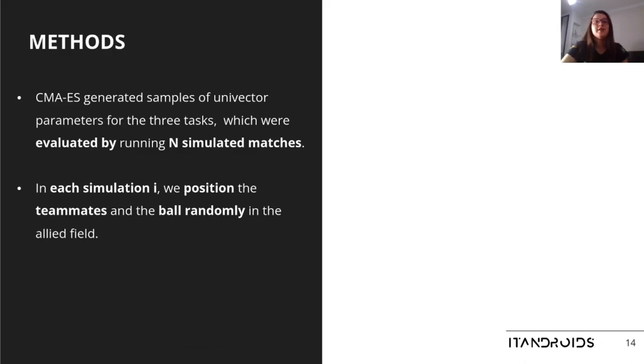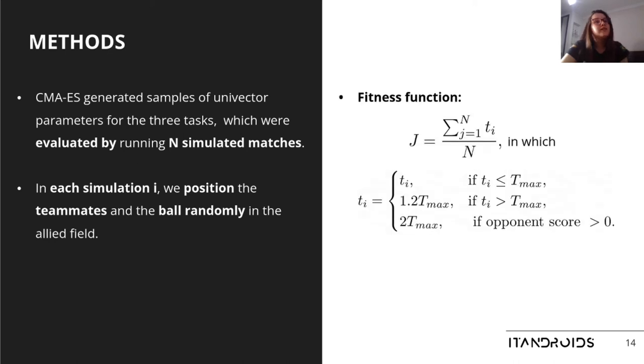CMA-ES generated samples of univector parameters for the three tasks, which were evaluated by running N simulated matches. In each simulation i, we position the teammates and the ball randomly in the allied field. The fitness function measures the average time in seconds that the teammates take to score a goal in each simulation.